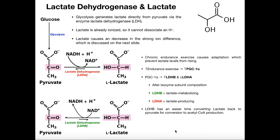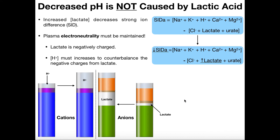It turns out that it's actually going to come from something called the strong ion difference. So what is the strong ion difference? If we're talking about the blood — the plasma, which is the fluid in the blood — the plasma wants to maintain something called electroneutrality. There are all sorts of ions in the blood. We have positive ions or cations such as sodium, potassium, calcium, magnesium, and of course some hydrogen ions. We also have anions — negatively charged ions — those include chloride, lactate, and urate. In the context of this video, we're really only concerned about the hydrogen ions as the major cation and lactate as the major anion.